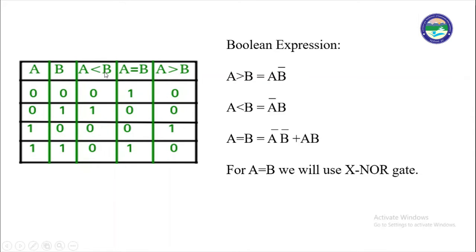For A less than B, the Boolean expression will be: we get 1 when A is 0 and B is 1, so we can write it as Ā·B. For the A equal to B case, we get 1 in two cases: when both A and B are 0, and when both A and B are 1. So we can write it as Ā·B̄ + A·B. This expression is equivalent to XNOR of A and B. So, the Boolean expression for A equal to B will be Ā·B̄ + A·B.